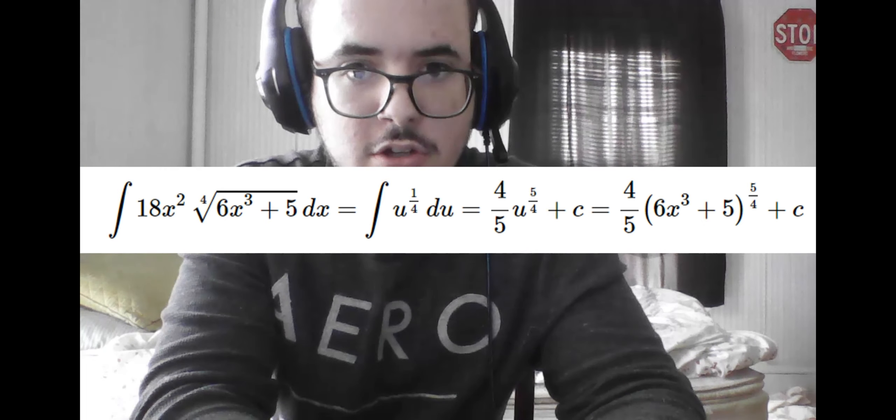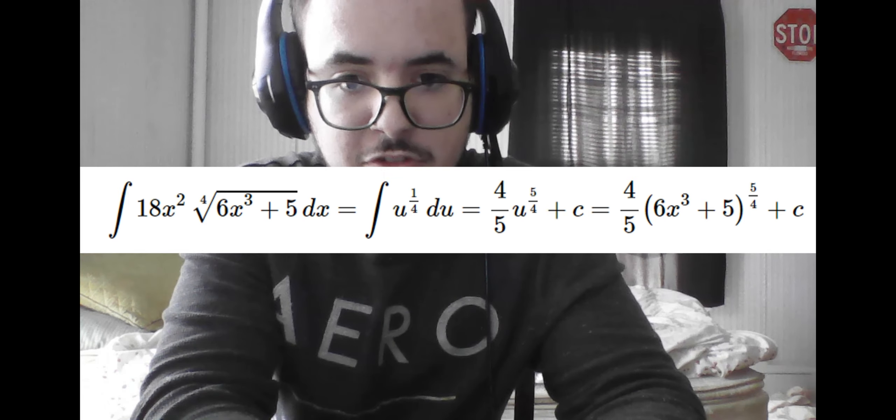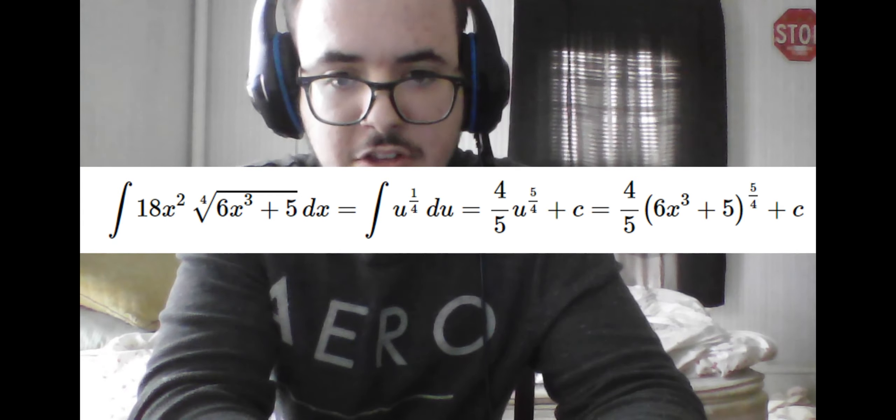So once we compute the integral using the power rule, we simply plug back in 6x cubed plus 5 for u, and then add the constant of integration like for any indefinite integral.